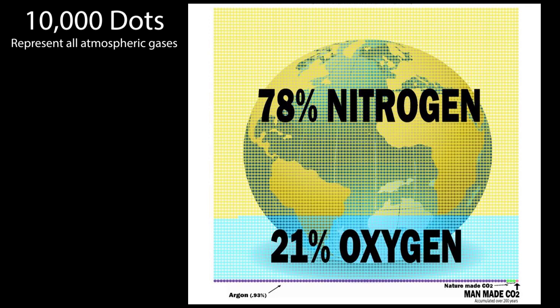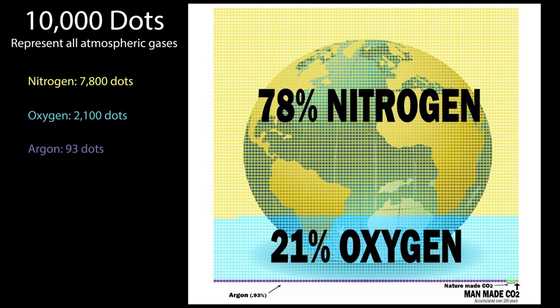The next slide shows 10,000 dots representing all the gases in the atmosphere. As you learned in high school, 7,800 of those dots are nitrogen, 2,100 are oxygen, 90 are argon — four dots, four thousandths of the atmosphere, 400 parts per million, is carbon dioxide. And only one of those dots is what we contribute.